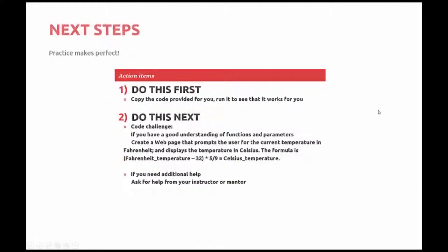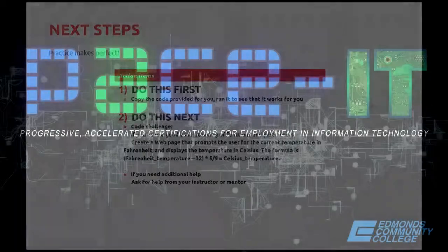So what should you do next? First, copy the code that's provided for you after this video. Run it to see if it works for you. And if you feel you have a good understanding of functions with parameters, create a web page that prompts the user for a current temperature in Fahrenheit and displays the temperature in Celsius. The formula for you there is written there: Fahrenheit minus 32 times 5 ninths equals the Celsius temperature. And as always, if you need extra help, be sure to talk to your instructor or your mentor.